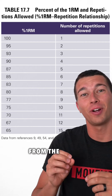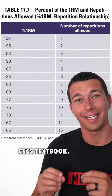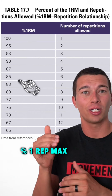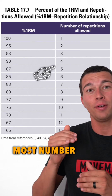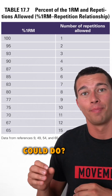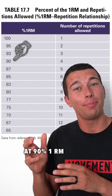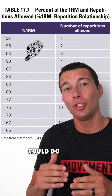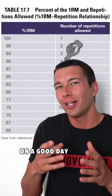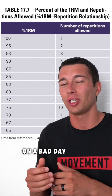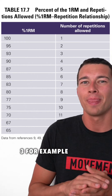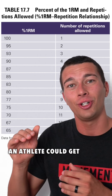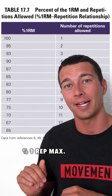This is one of the most useful charts from the CSCS textbook. What this chart is telling us is that at a given percent one rep max, what is the most number of reps that an athlete could do? On average, for example, at 90 percent one rep max, the most reps that an athlete could do is around four reps. On a good day they might get four or five reps, on a bad day they might get three. But this is a good baseline for about the most number of reps an athlete could get at any given percent one rep max.